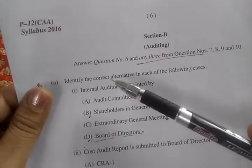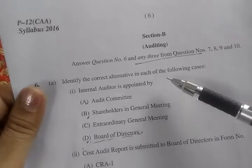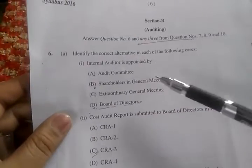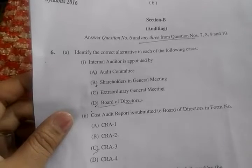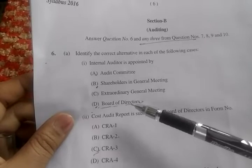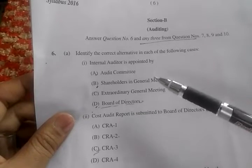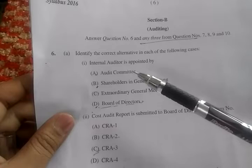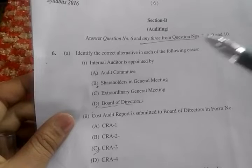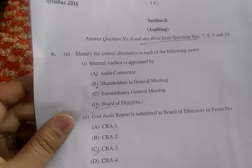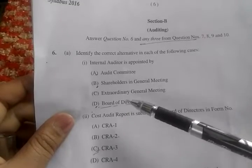Question number 6A: Identify the correct alternatives in each of the following cases. First question: Internal auditor is appointed by. In the books it refers to management, but some places mention Board of Directors. I am giving the answer as option D — Board of Directors. If the answer is wrong, please write in the comment box as I have some doubt between audit committee and board of directors.